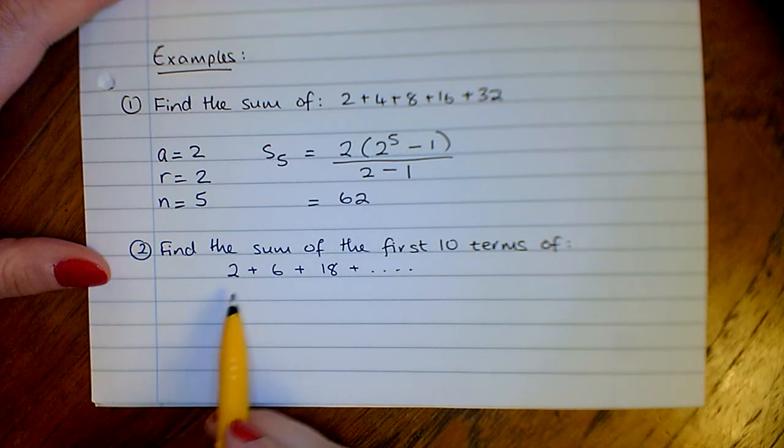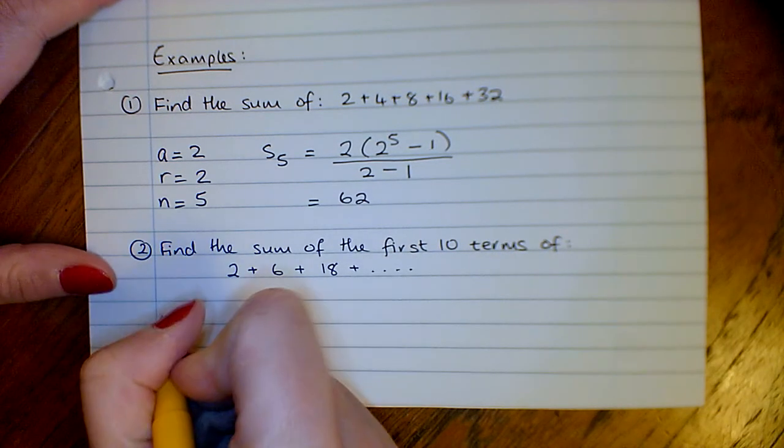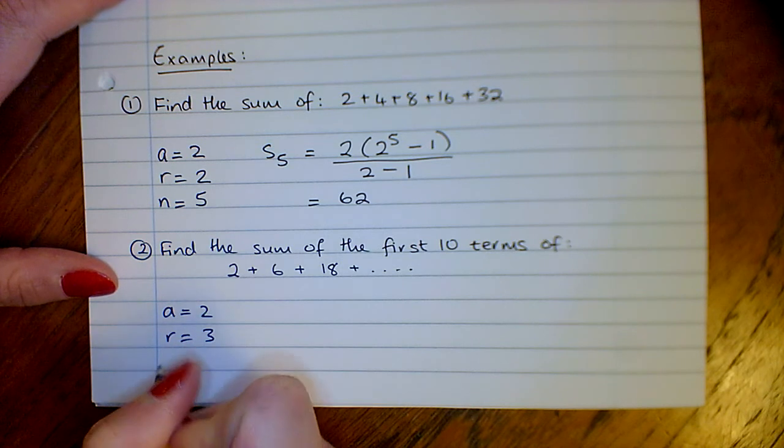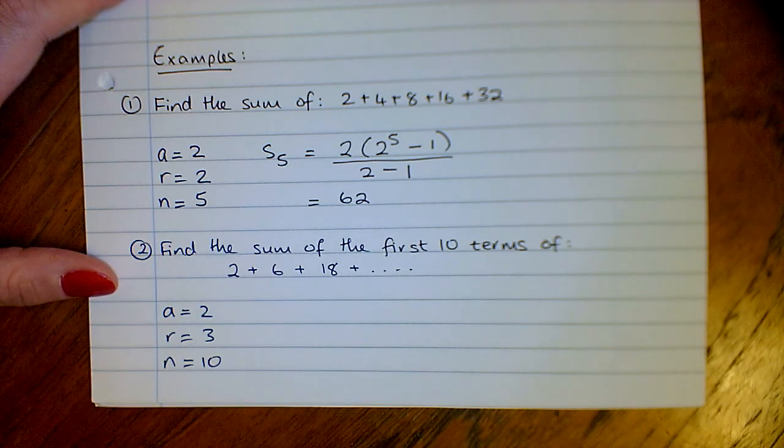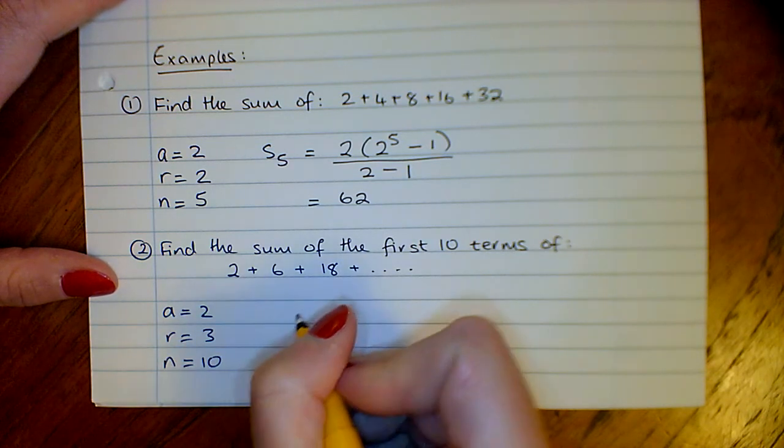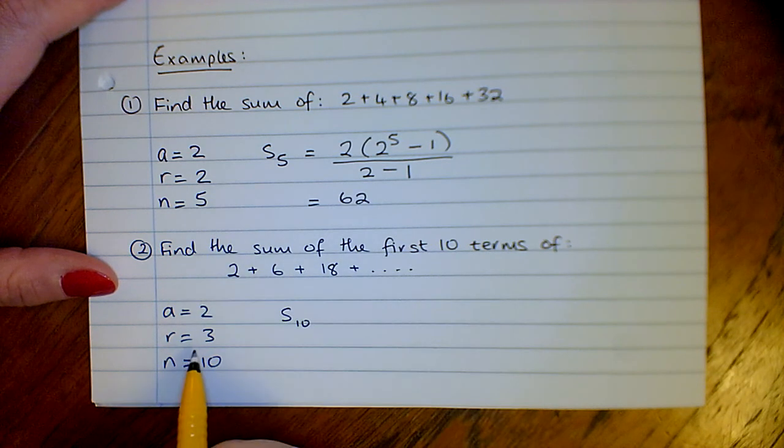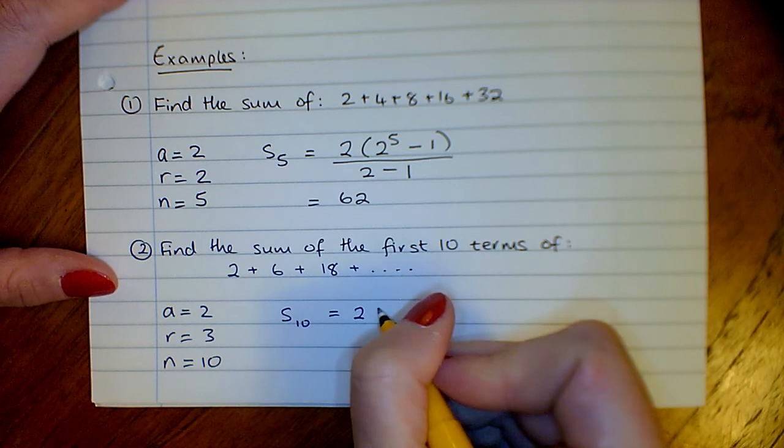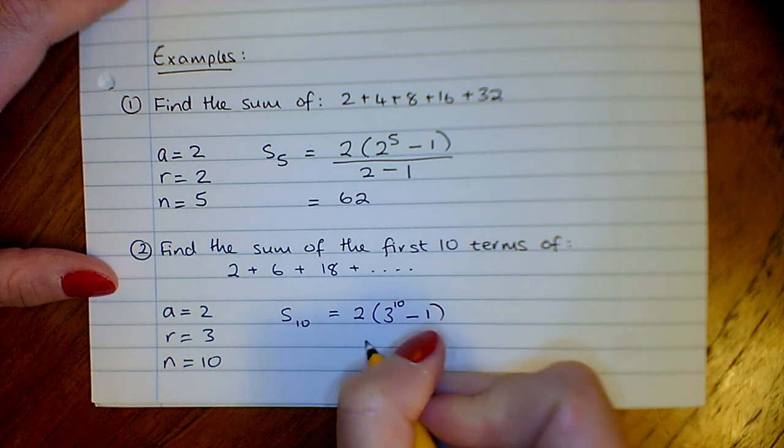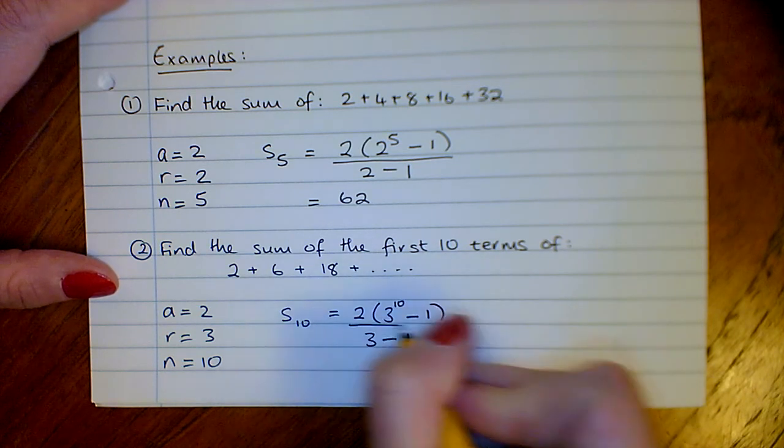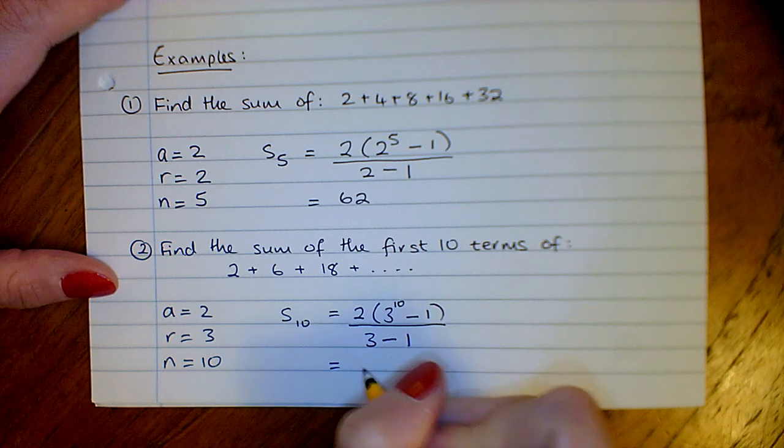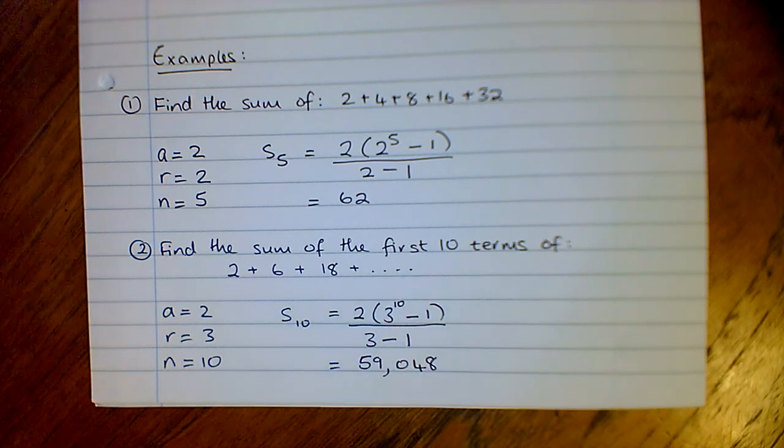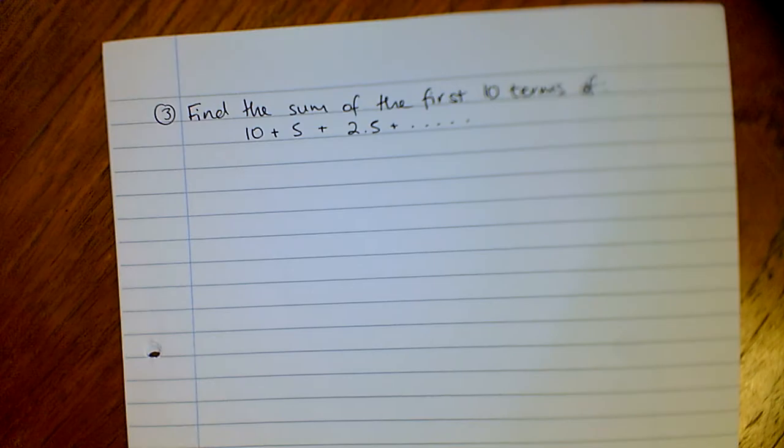Our second one, find the sum of the first 10 terms of 2 plus 6 plus 18, etc. Our first term is 2, our ratio is 3, and we're trying to find the sum of the first 10 terms. Again, our ratio is greater than 1, so it's 2 times (3 to the power of 10 minus 1) over (3 minus 1). The sum of the first 10 terms turns out to be 59,048.